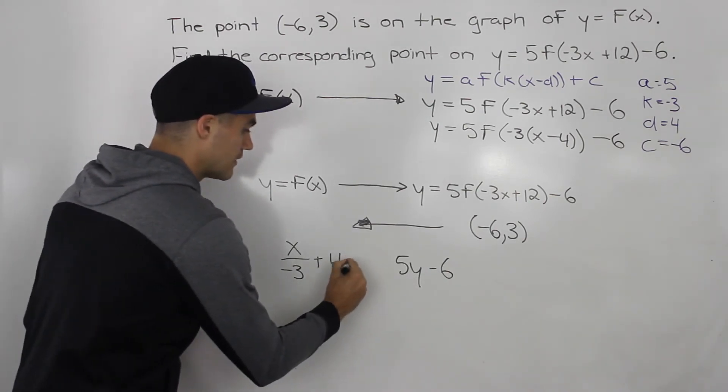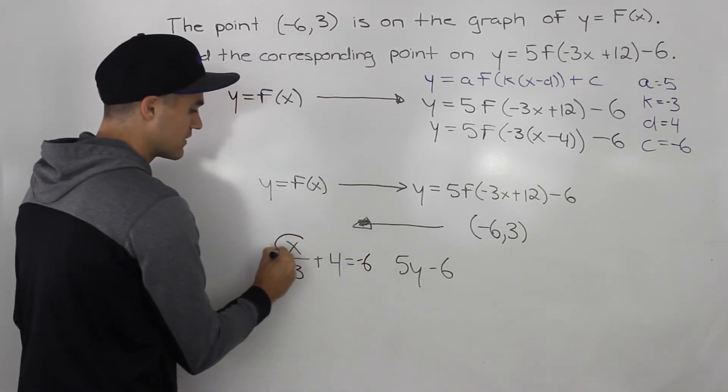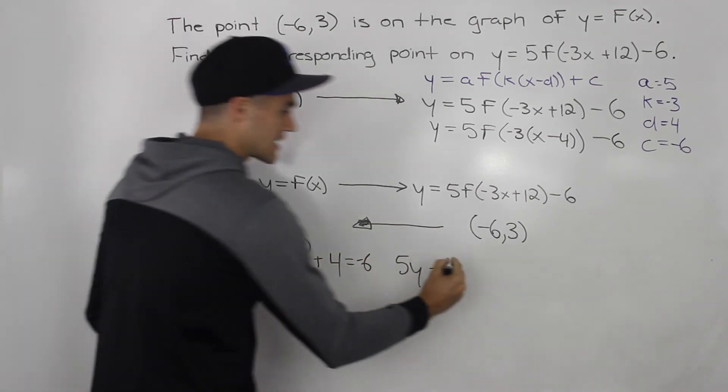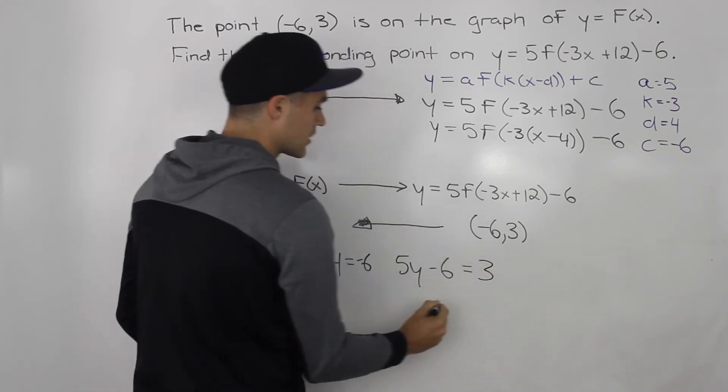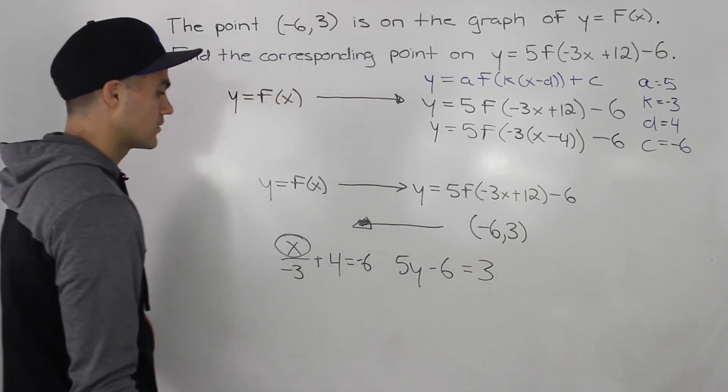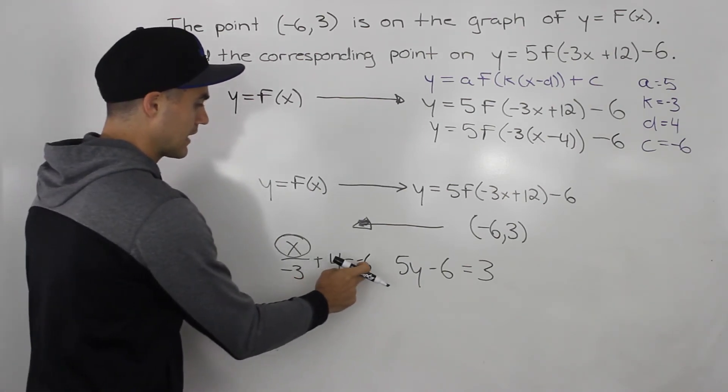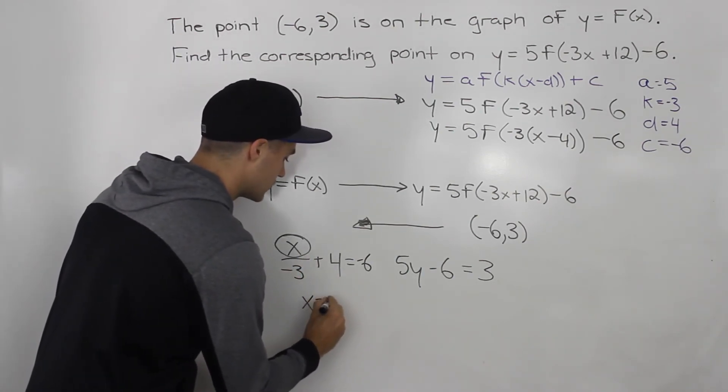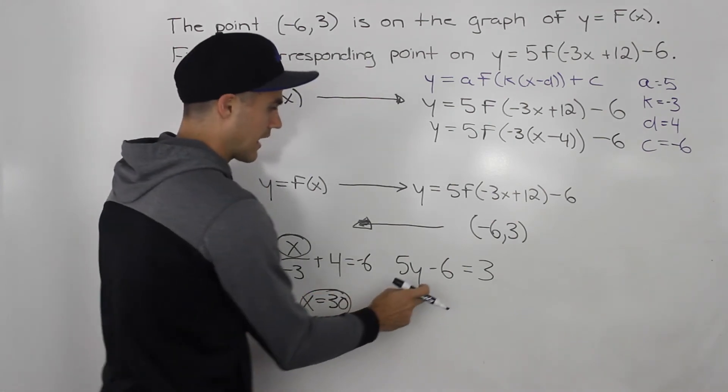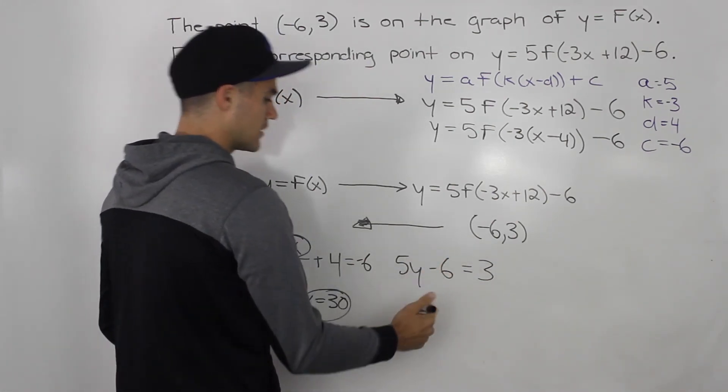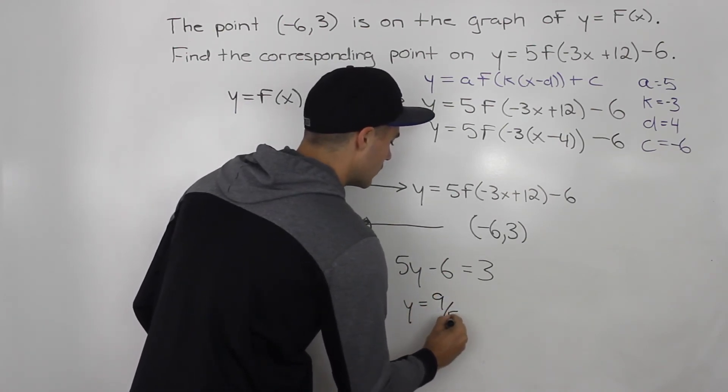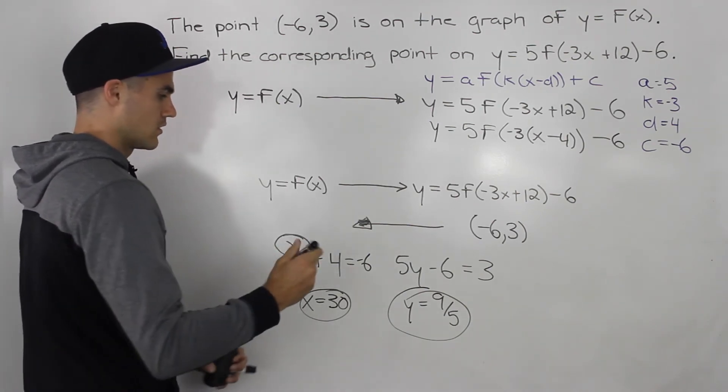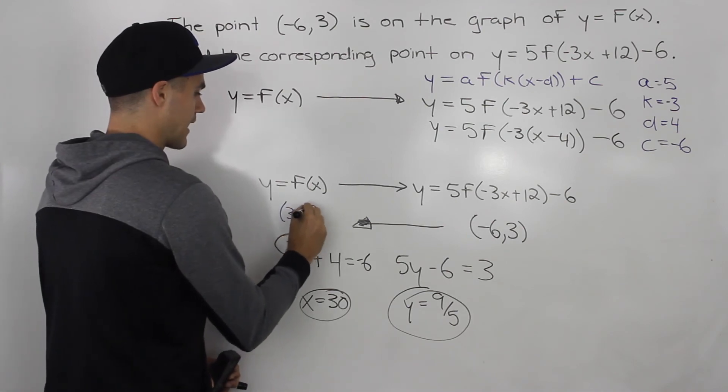But you would make this whole expression equal to -6, and then you would solve for this x value, which is the original x value on the parent function. And then same thing here, you would make that whole expression equal to 3, and then solve for that y value. So when you do that, you would end up getting -6, you bring the 4 over, it'd be -10, cross multiply -10 times -3, so you'd get an x value of 30. And for this one, you bring this over, be 9, 9 divided by 5, so the y value would be 9/5. So the original point on the parent function would be (30, 9/5).